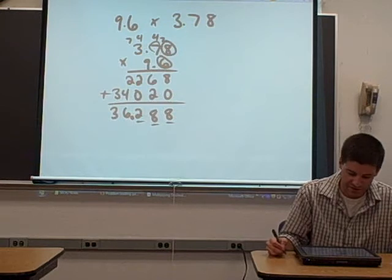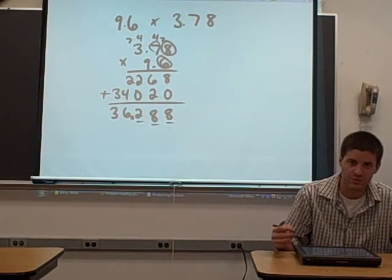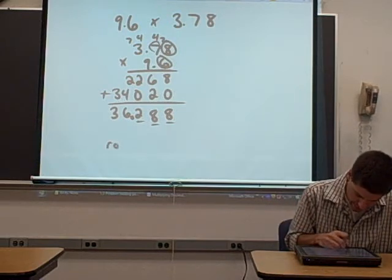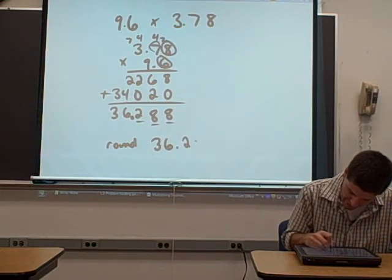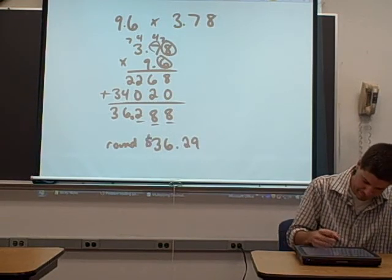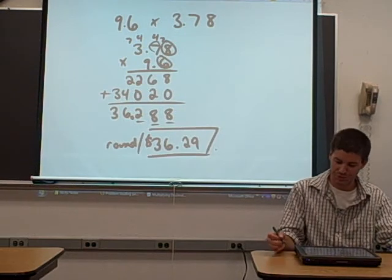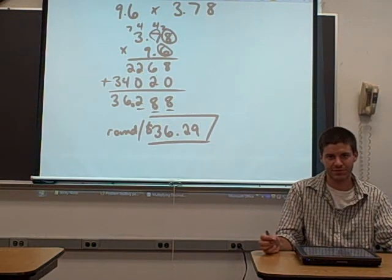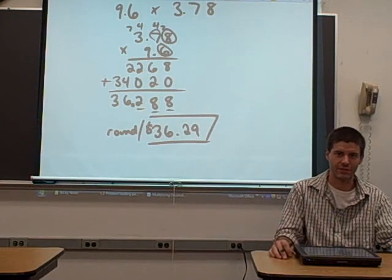The answer to this problem, of course, is going to be in dollars. We're asking how much did I pay for my gas this morning. So we're going to round this to the nearest cent, which means we're going to round to $36.29. That's how much I paid for my gas this morning. All right, great. So that's it for multiplying decimals. Come back, and we're going to do some division of decimals in the next video.